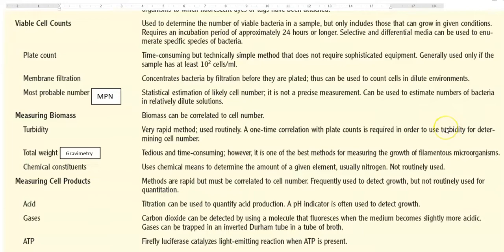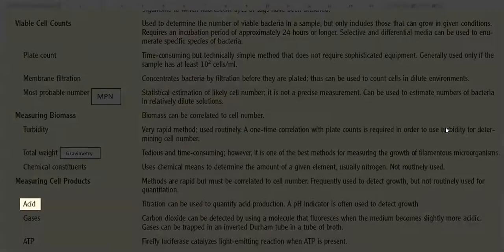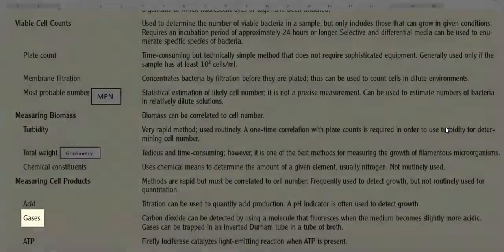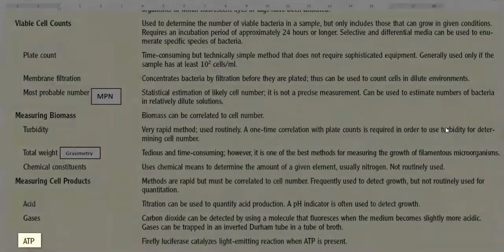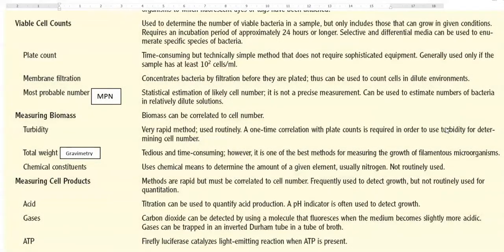The next method is measuring the cell products. It includes measuring the amount of acid produced by the cell or gas produced by the cell or ATP produced by the cell. These methods are rapid but must be correlated to cell numbers. They are frequently used to detect the growth but not routinely used for quantification of the organism present there in the sample.